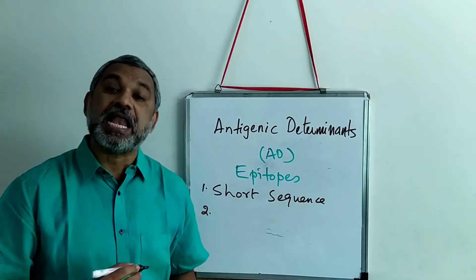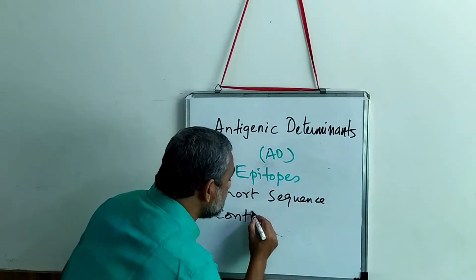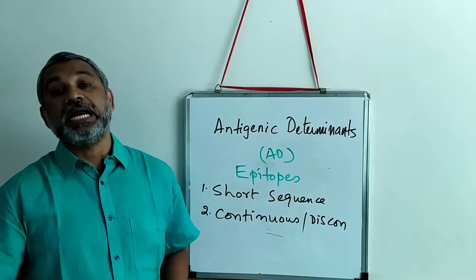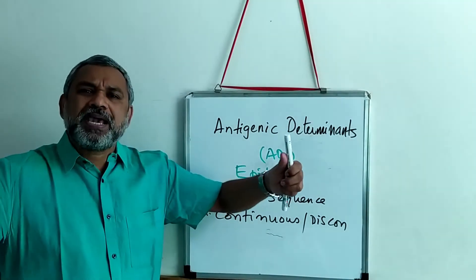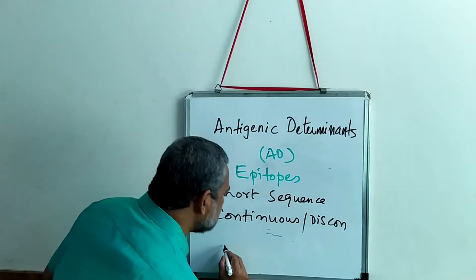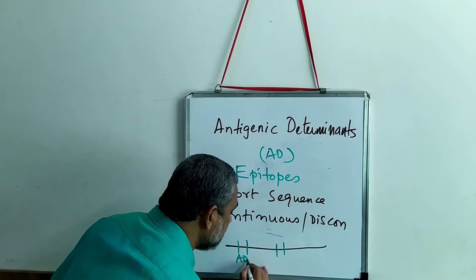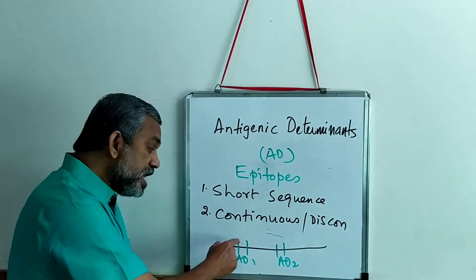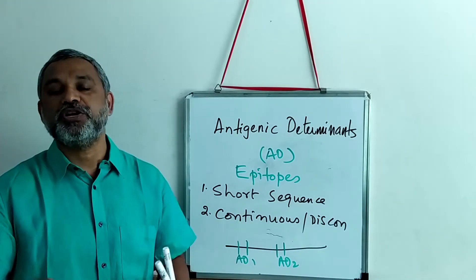The second characteristic of an antigenic determinant is that they can be continuous or discontinuous. A continuous antigenic determinant means that when you look at the primary sequence — the primary structure of a protein — these antigenic determinants can be arranged in a continuous form. Each one, antigenic determinant number 1, antigenic determinant number 2, can be continuously arranged, and each one is capable of inducing an immune response. That is the meaning of a continuous antigenic determinant.